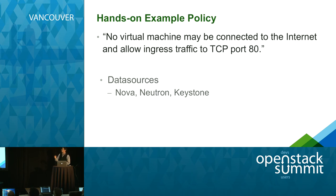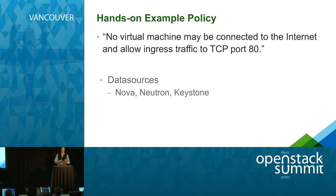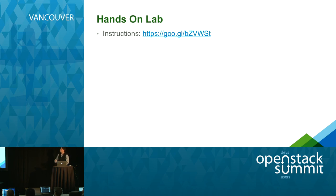For the rest of this hands-on, we're going to focus on one particular policy: no virtual machine may be connected to the internet and also allow ingress traffic on TCP port 80. This is the kind of example where the admin wants VMs connected to the internet but doesn't want to allow unsecured traffic, so only port 443 is allowed instead of port 80. This example uses three data sources: Nova, Neutron, and Keystone. Instructions for the hands-on are at the website shown. I and my colleagues Tim, Aaron, and Pete are here, so feel free to ask us any questions.